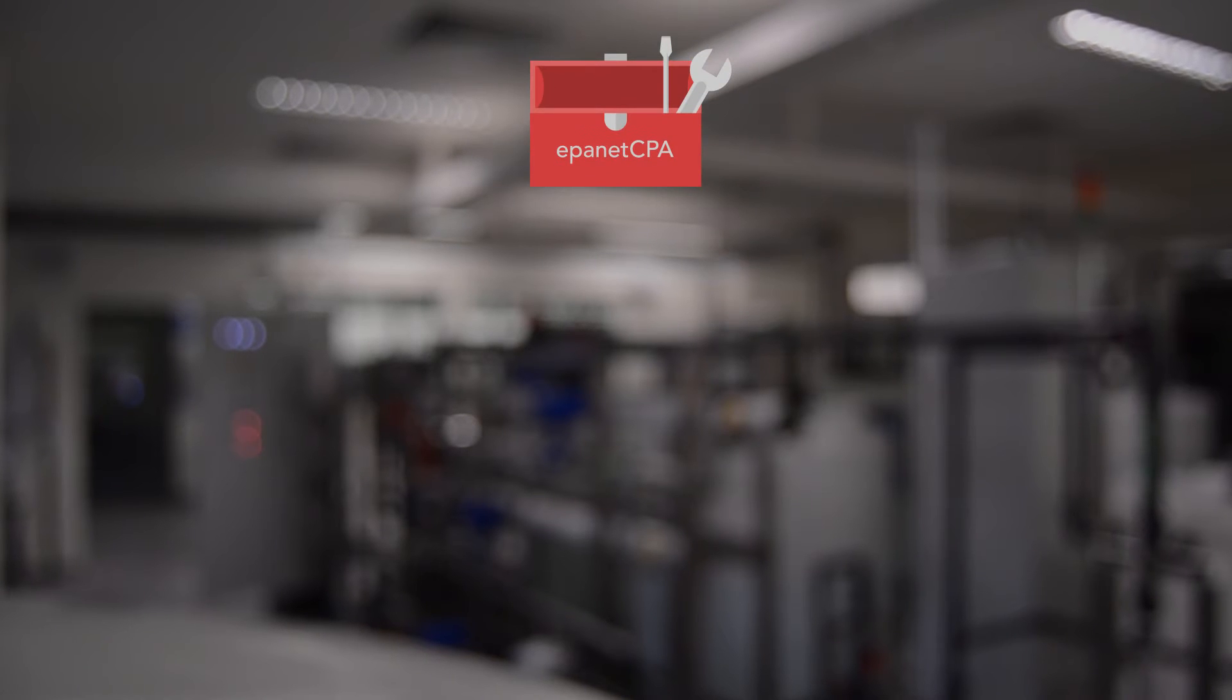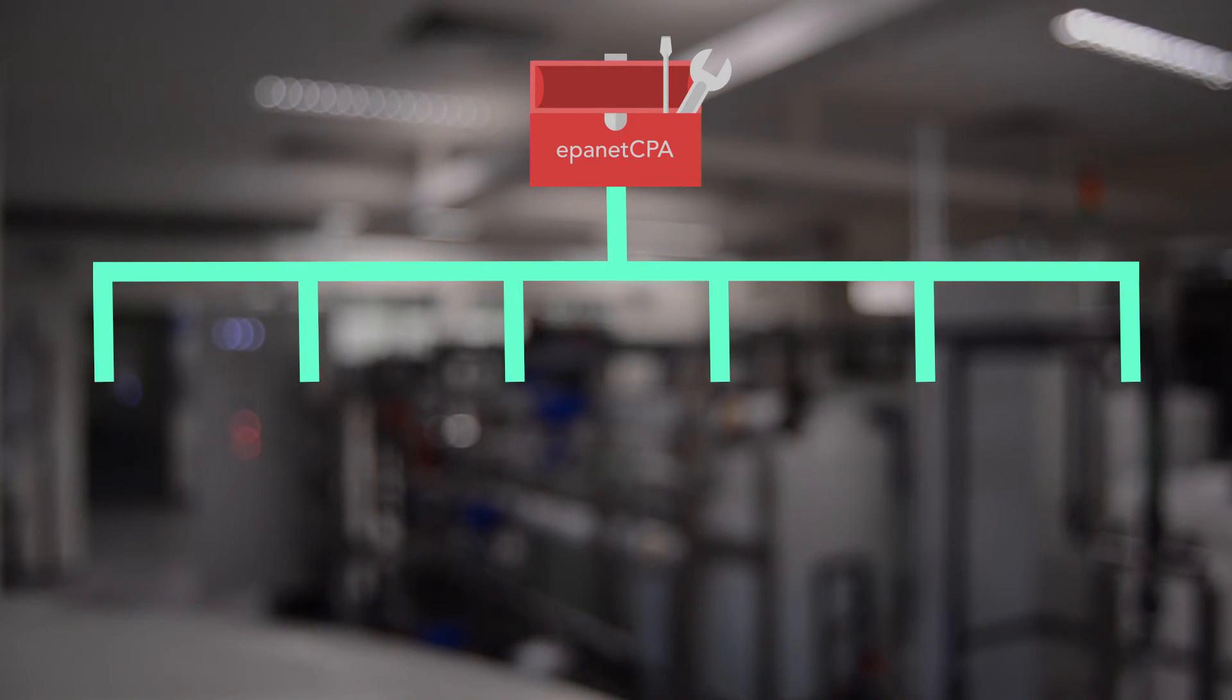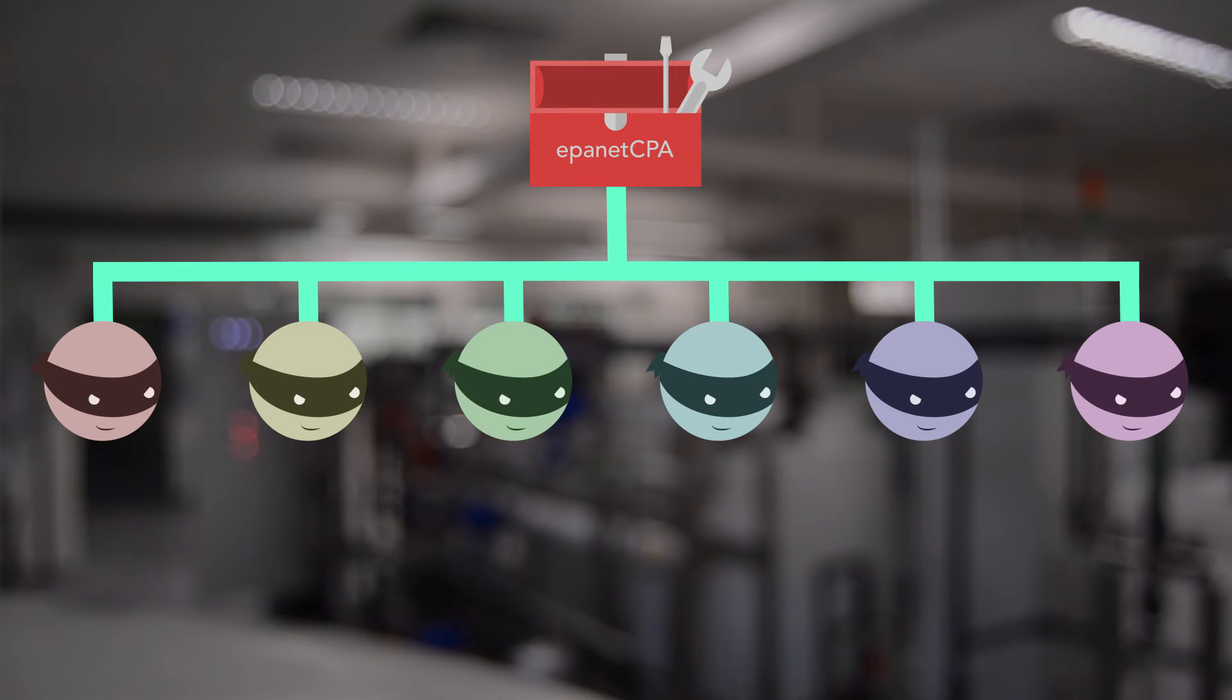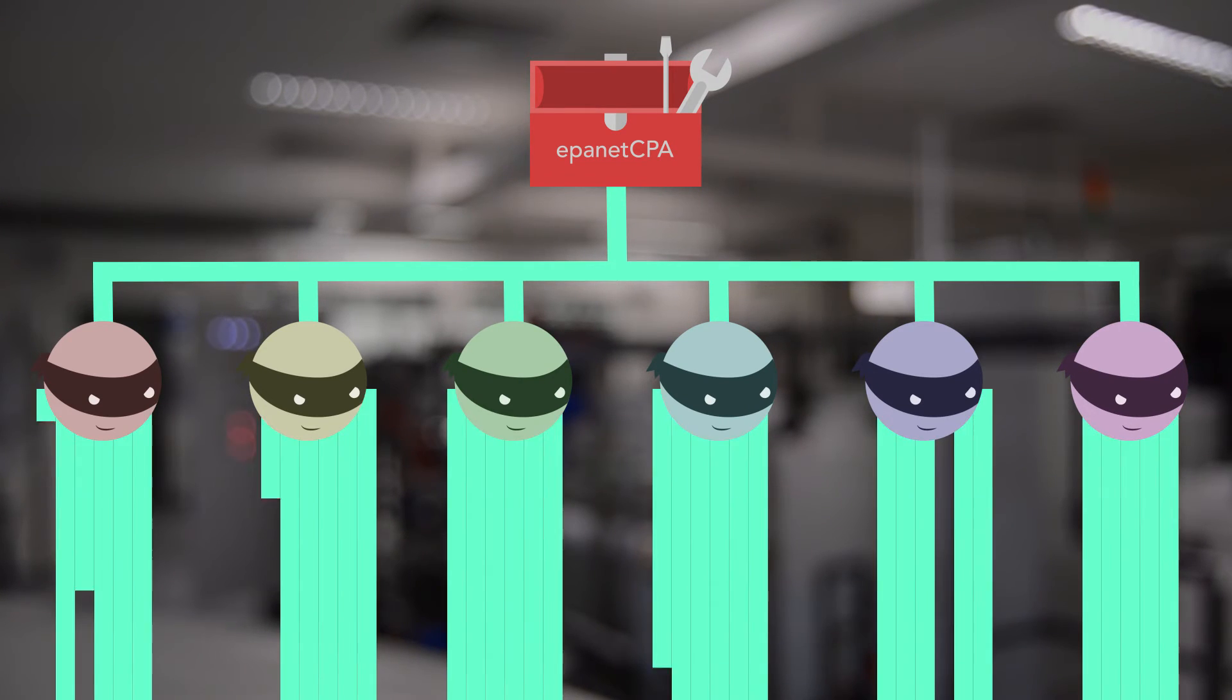The researchers took these tools and applied six different attack scenarios, which targeted different components of a medium-sized water distribution network, and repeated them hundreds of times under different conditions.